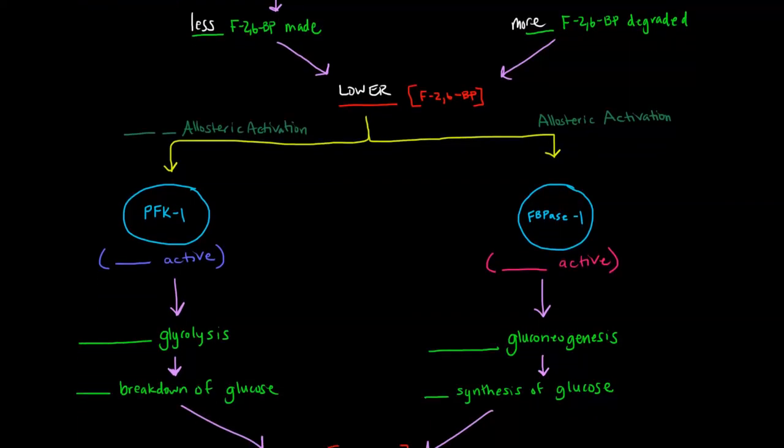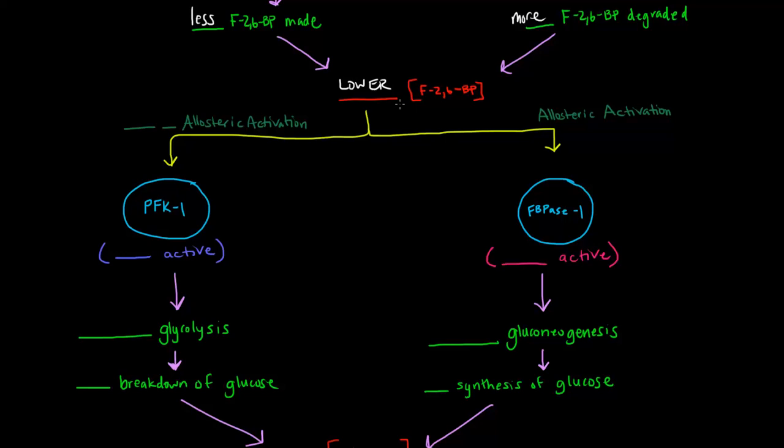Now that fructose-2,6-bisphosphate, what does that do? Well, we said that low levels of fructose-2,6-bisphosphate allosterically activate fructose bisphosphatase-1, which is a part of gluconeogenesis. So this is going to be more active. So if this is more active, this means increased gluconeogenesis, which means more synthesis of glucose.